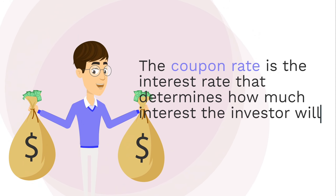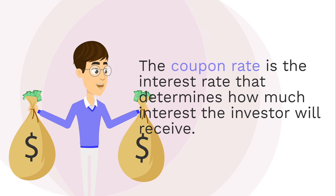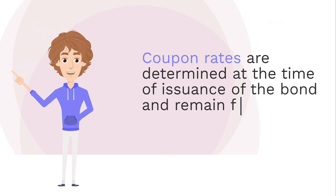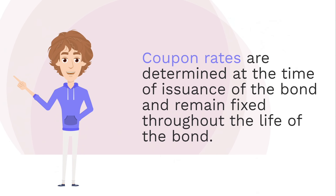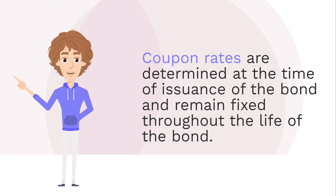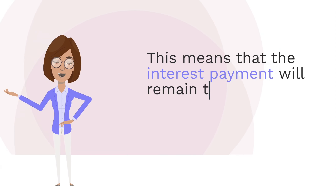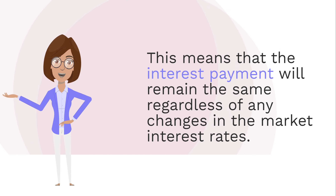The coupon rate is the interest rate that determines how much interest the investor will receive. Coupon rates are determined at the time of issuance of the bond and remain fixed throughout the life of the bond. This means that the interest payment will remain the same regardless of any changes in the market interest rates.